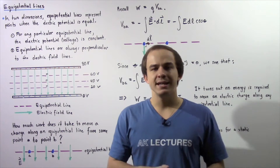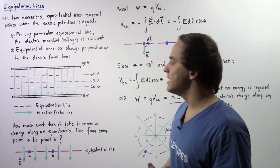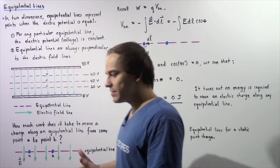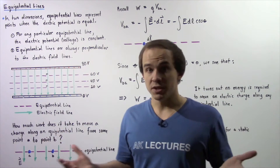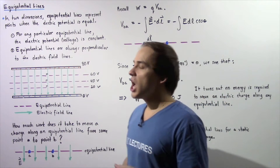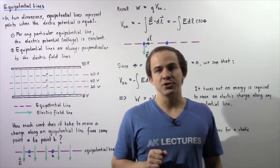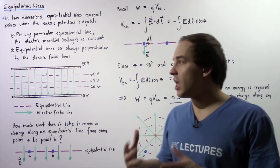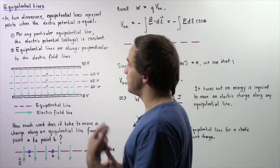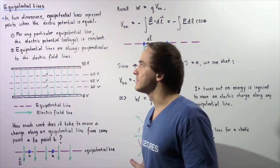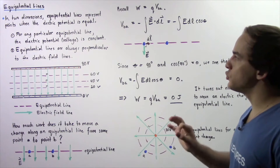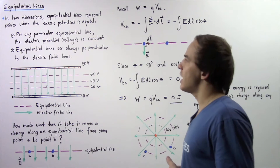In this lecture, we're going to begin our discussion on Equipotential Lines. In two dimensions, Equipotential Lines are known as Equipotential Lines because we have only two dimensions. In three dimensions, our Equipotential Lines are no longer called lines, but rather surfaces because of the third axis, the z-axis. So we're only going to focus on the two-dimensional Equipotential Line.